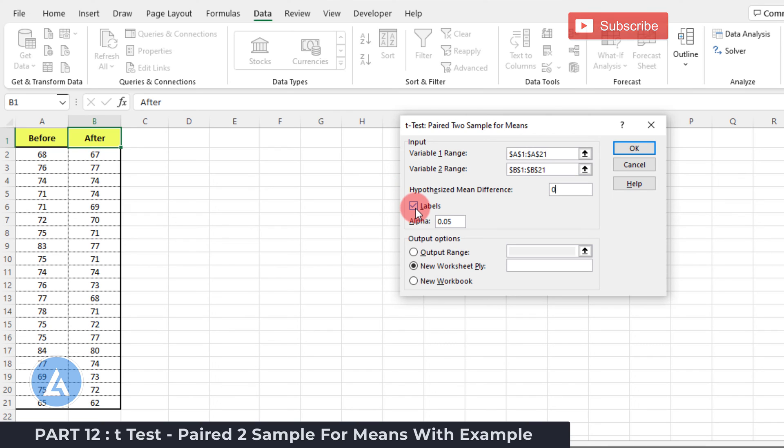Please check this option of labels because we are having the labels for these columns in the first row. Keep the default value of alpha as 0.05 and default output option as new worksheet plan. And then click OK.